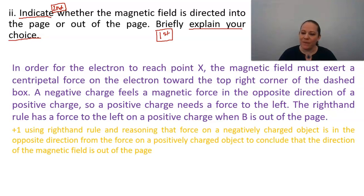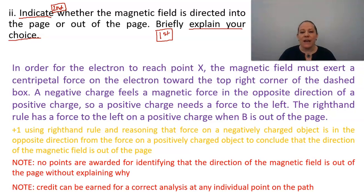In our scoring, we get a point for using the right-hand rule and reasoning that the force on a negatively charged object is in the opposite direction from the force on a positively charged object to conclude that the direction of the magnetic field is out of the page. And note that no points are awarded for identifying that the direction of the magnetic field is out of the page without explaining why. And also note that credit can be earned for a correct analysis at any individual point on the curved path.